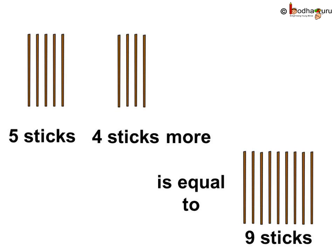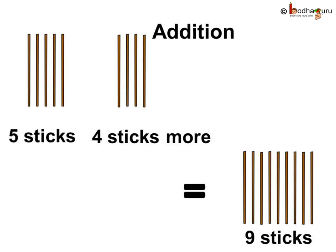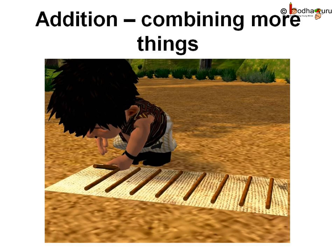Instead of writing 'is equal to', let us write the equals symbol. This symbol means 'is equal to'. This is called adding, or addition. Addition in simple words means combining more things to what we already have — like Bola had five sticks and after adding four more sticks, he now has nine sticks.